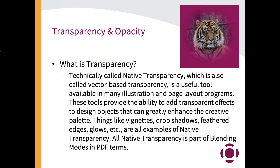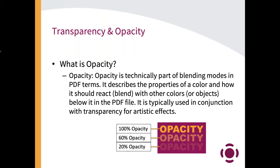Opacity is different. Opacity is technically still part of blending mode, but it describes a property of a color or an object and how it blends with the colors or objects below it. For example, an orange color at 100% opacity knocks out 100% of everything below it. At 60% opacity, it allows 40% of whatever's below it to show through. At 20%, it allows 80% to show through. It could be a color, an object, or a picture. For those who've been in the industry a long time, it's like putting a screen on a color.